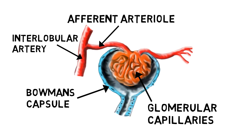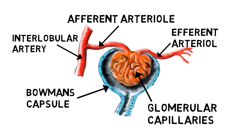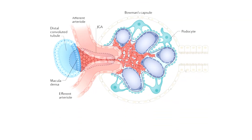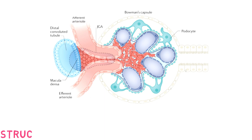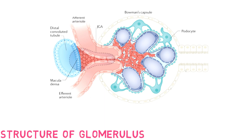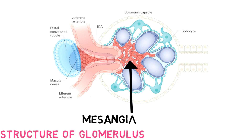And this is the efferent arteriole, which carries blood away from the glomerulus. A type of contractile cells are present in the glomerulus, called mesangial cells, which constitute the central stock of the glomerulus. These cells perform various functions, including regulation of GFR and release of inflammatory mediators.